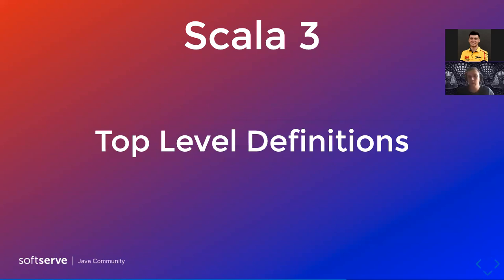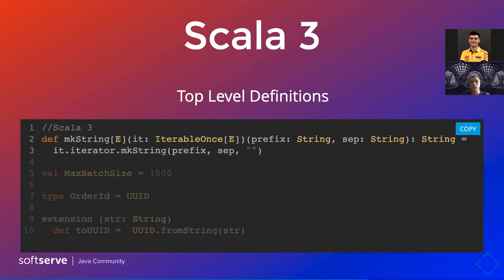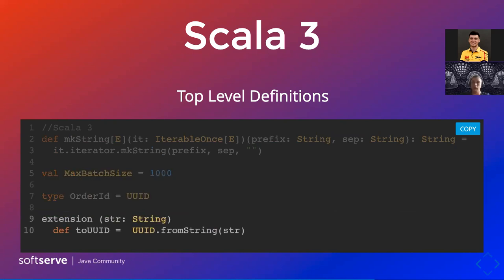Next feature: top-level definitions. In Scala 2, we didn't have the ability to declare functions at the top level of a file. We were forced to create so-called package objects to make functions like `mkString` available across the whole package. But in Scala 3, you don't need to do this. You can just create a Scala file in your package and put a bunch of functions directly in it. This is a great simplification for Scala.